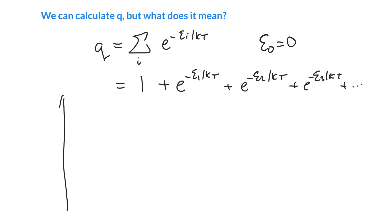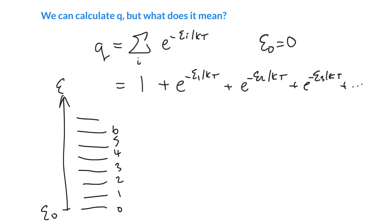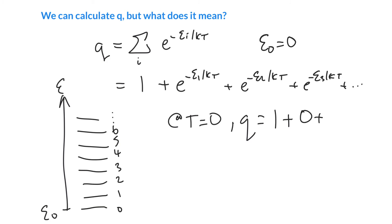We can draw an energy ladder with the lowest energy set to zero at the bottom, and states going up: zero, one, two, three, four. At absolute zero, our expression for Q is one plus... well, dividing the energy by zero means the exponent is infinitely large, and e to the minus infinity is essentially zero. So we get a whole bunch of zeros. This tells us that at absolute zero, the partition function equals one — the only state with any population is the ground state.